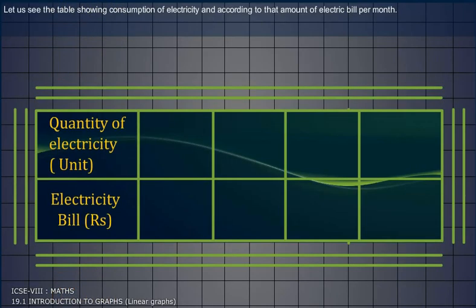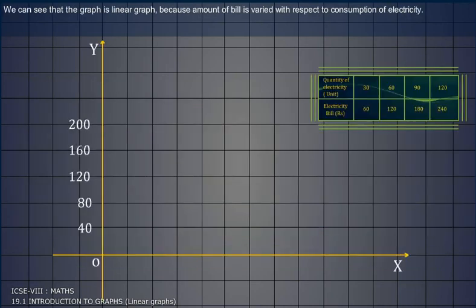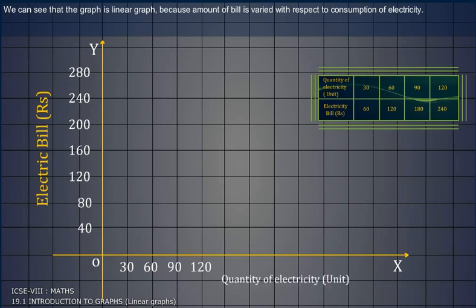Let us see the table showing consumption of electricity and according to that, the amount of electric bill per month. We can see that the graph is a linear graph because the amount of bill varies with respect to consumption of electricity.